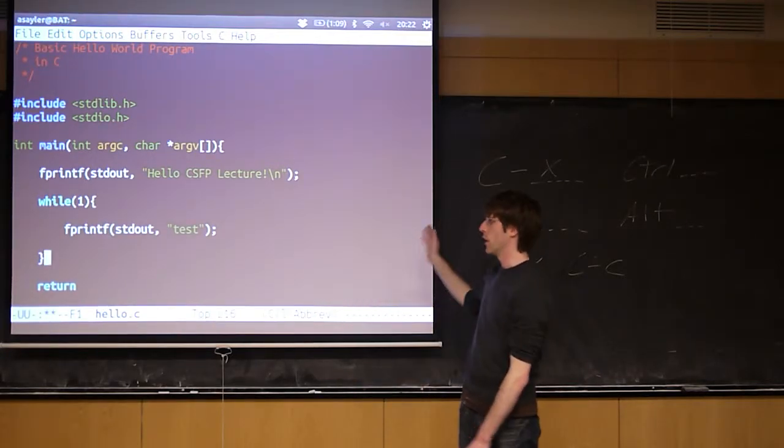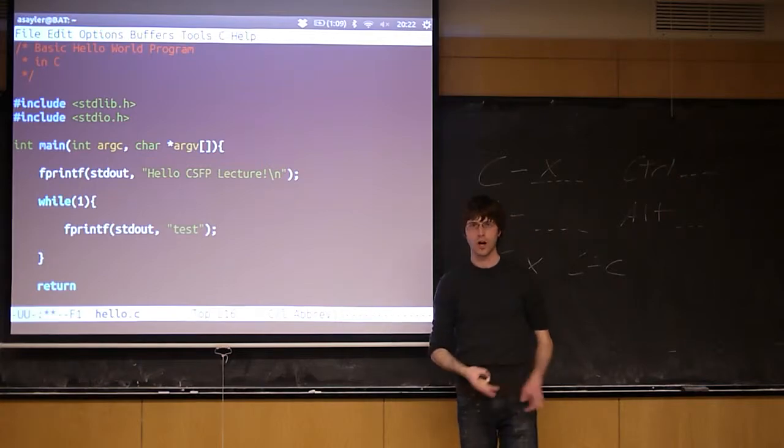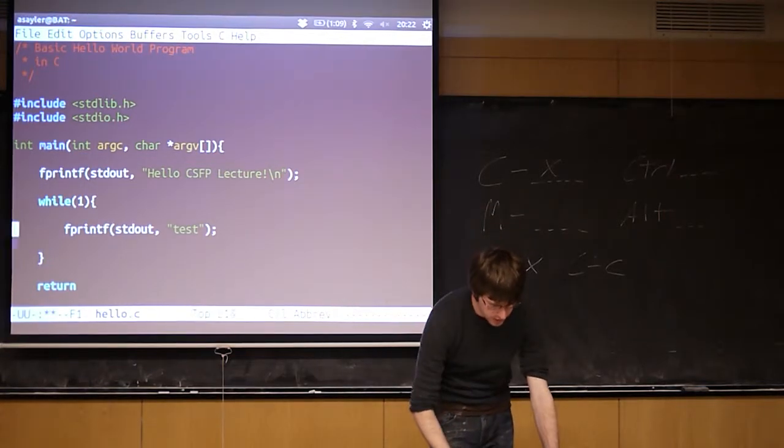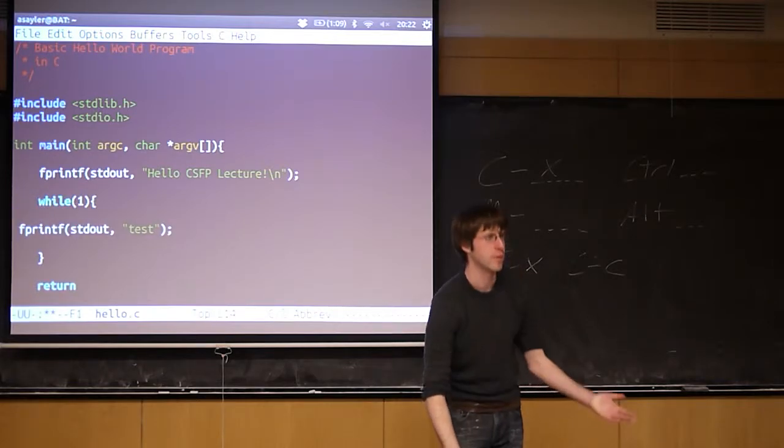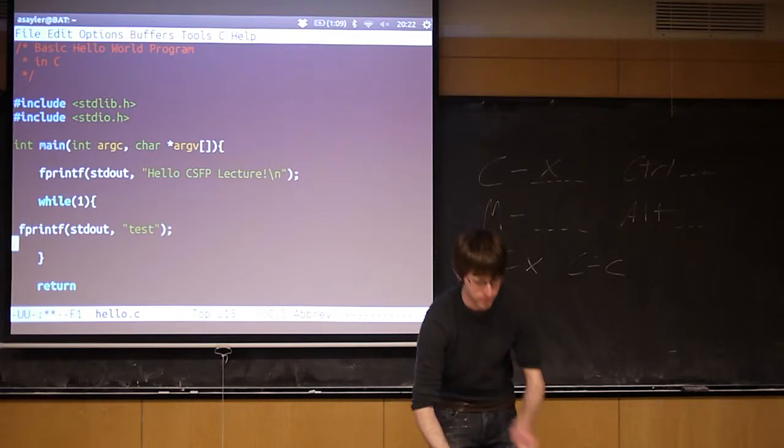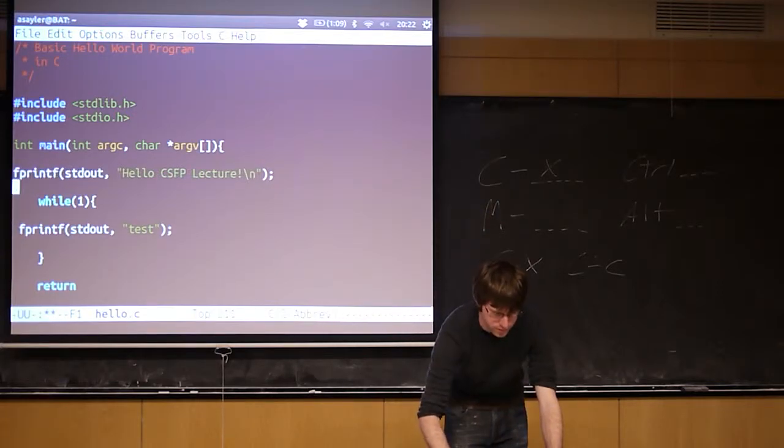So when you're in a language mode, it'll do a lot of these kind of things. Syntax highlighting, spacing, automatic alignment. You can actually, if you have an entire file that's misaligned because, so you copy a file from the internet or something, right? None of the tabs are in the right place. So you have something that's all screwed up like this.